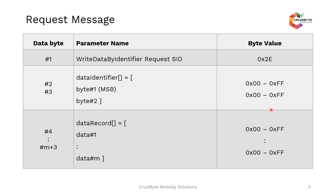You can also use write data by identifier for the body control module outputs. In the case of the instrument cluster, you can write the VIN number, or if a replacement of the instrument cluster happens in the vehicle, the old odometer value needs to be written back to the new cluster. In that kind of scenario, with security access, you can write the data into the ECU memory.